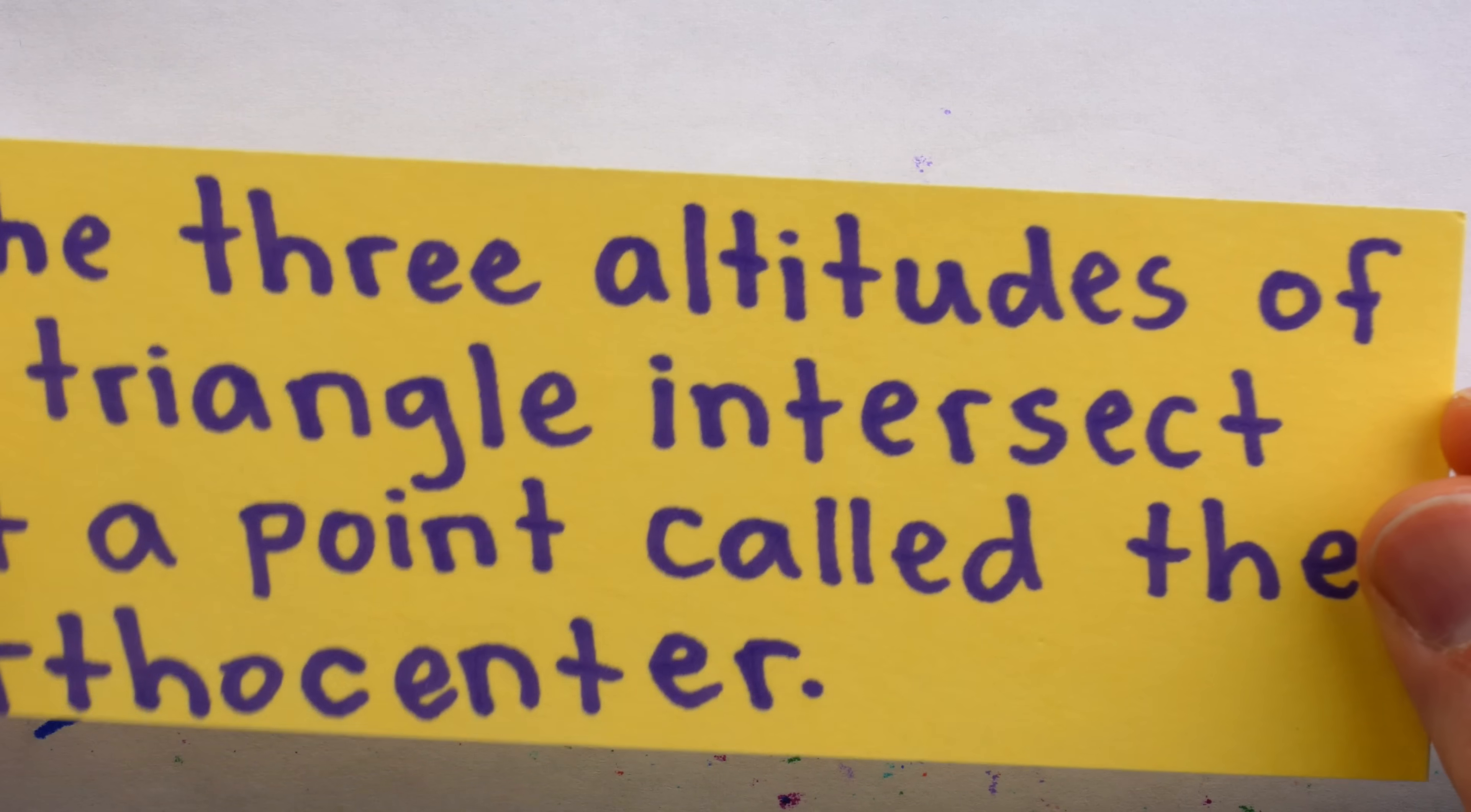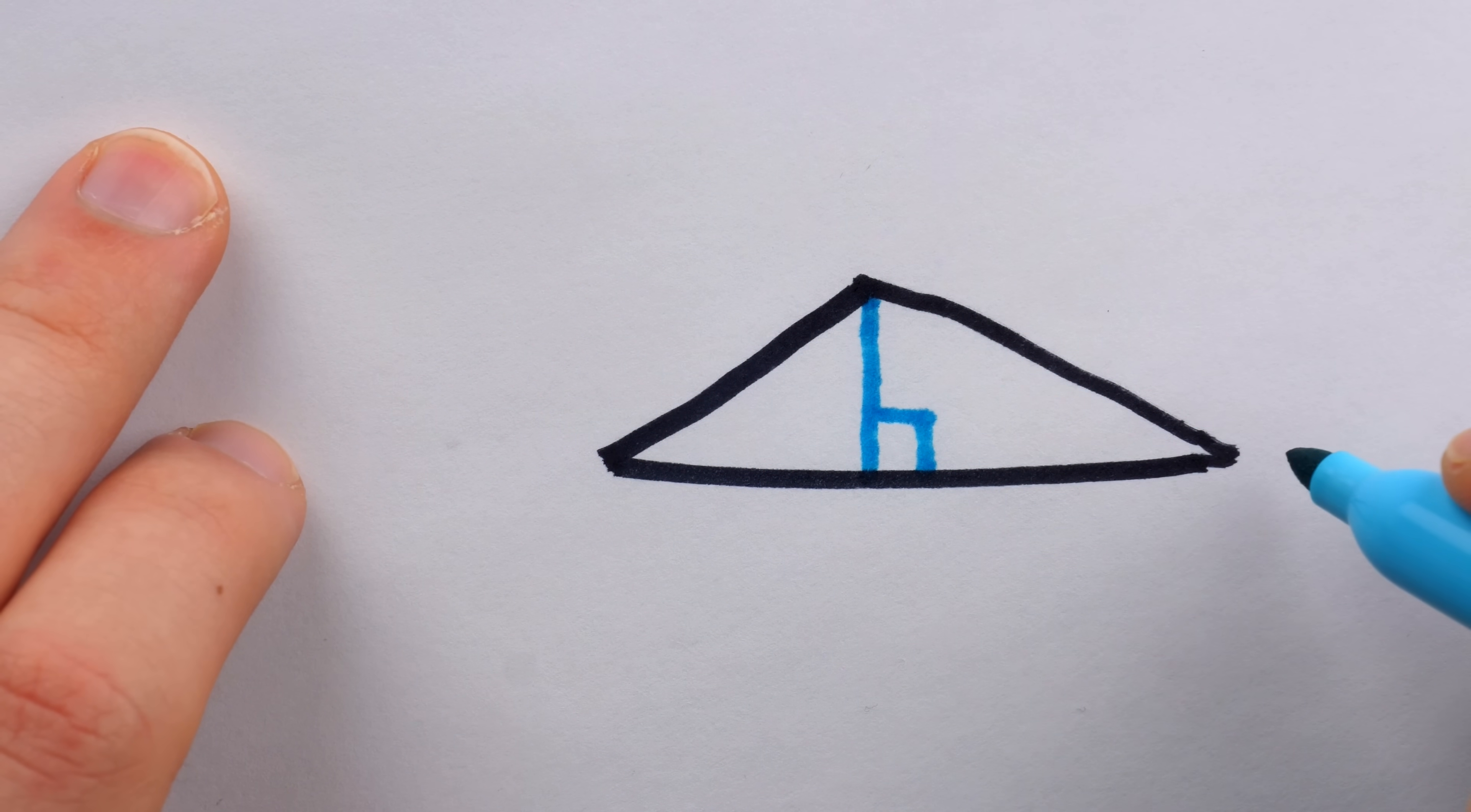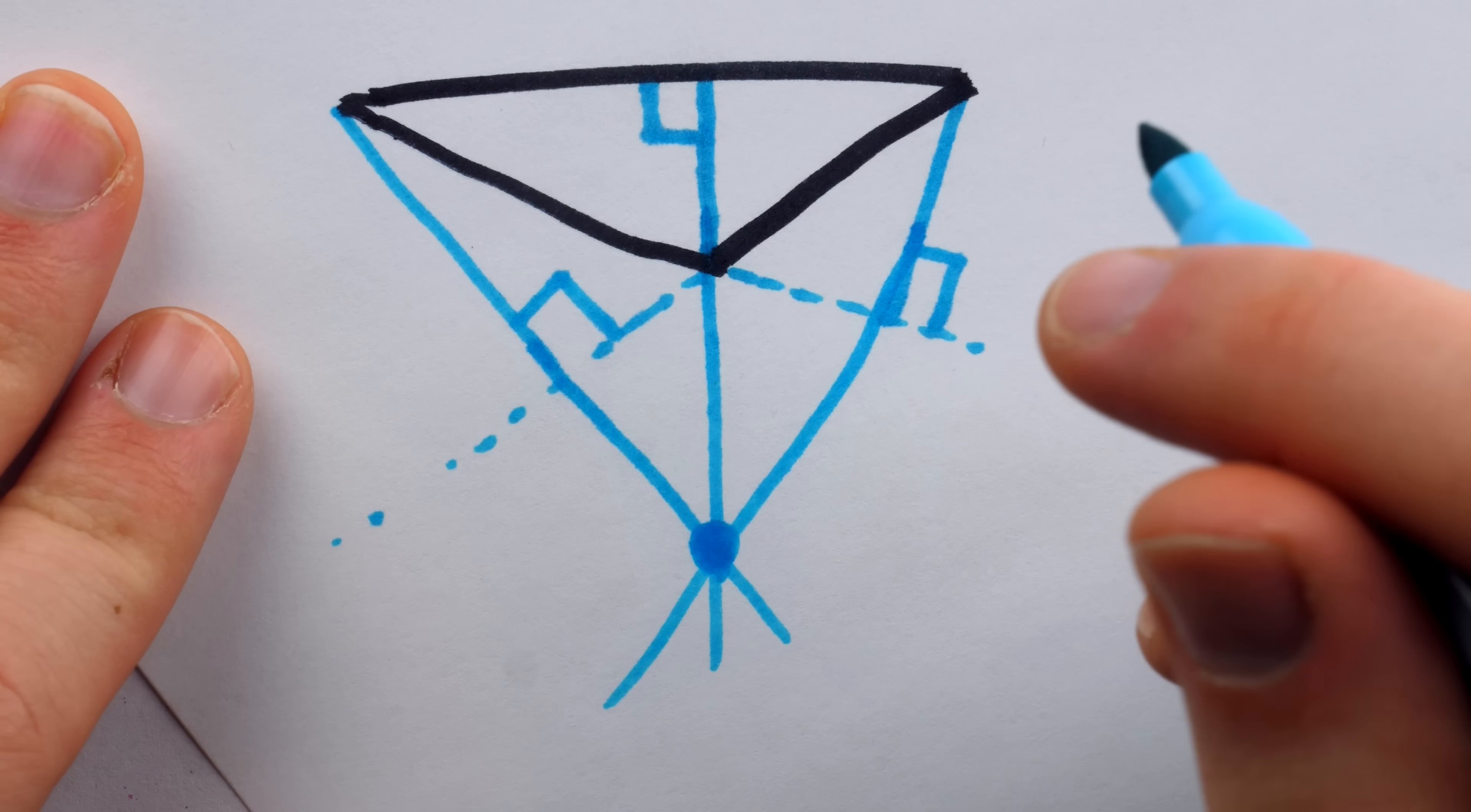And the other fact we'll use is that the three altitudes of a triangle intersect at a point called the orthocenter. An altitude of a triangle is a segment from one vertex which is perpendicular to the opposite side. Every triangle has three altitudes since they could come from any of the three vertices. In this case, you can see two altitudes of the triangle lie outside of the triangle, but that's fine. If we continue these altitudes on, they would intersect at a single point. Again, it's called the orthocenter.